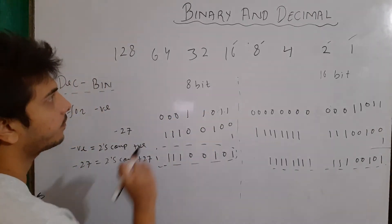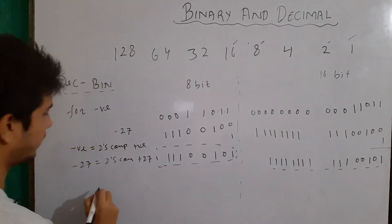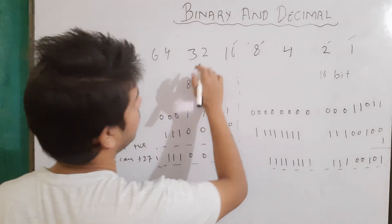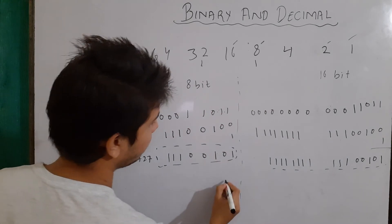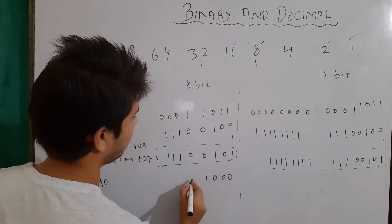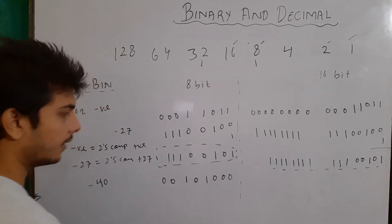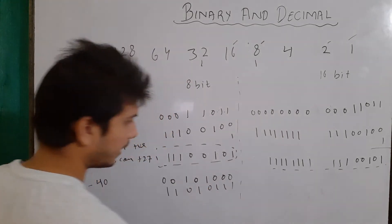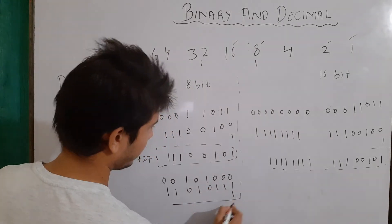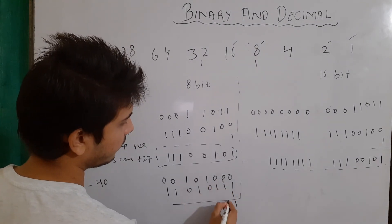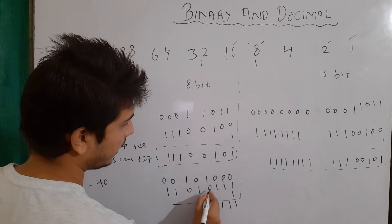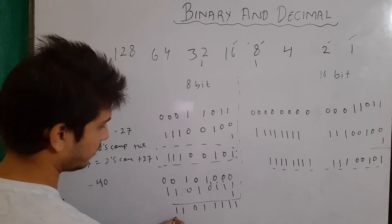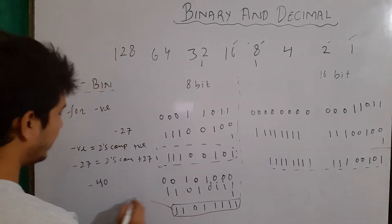Let's take another example: minus 40. The binary equivalent of positive 40 is 32 plus 8, giving 0 0 1 0 1 0 0 0. We flip the bits to get the one's complement: 1 1 0 1 0 1 1 1, then add 1. Applying binary addition with carries, we get the final 8-bit binary equivalent for minus 40.